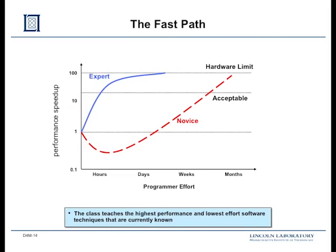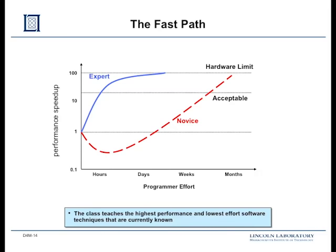You're going to be learning what we call the fast path. Without training, the typical path is: your program gets slower, you beat your head against the wall, maybe after days you get back to where you were, then slowly climb to some level of performance weeks later. The point of this class is to give you the techniques an expert would have — someone who can get good performance within hours, and take it to the next level within days.